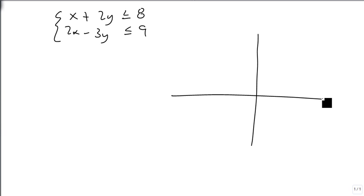x plus 2y is less than or equal to 8 is a great one for intercepts. We have an x-intercept at 8 and a y-intercept at 4, because they both divide evenly. So here's our first line, and it's a less than or equal, so it's going to be solid.